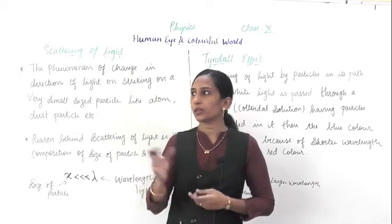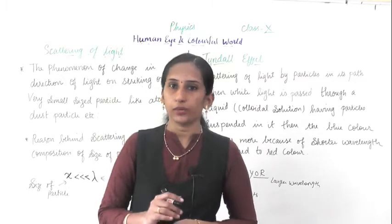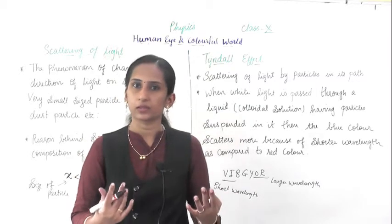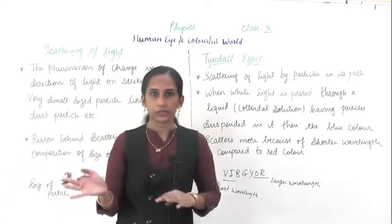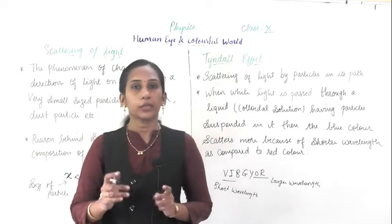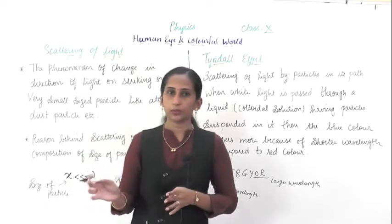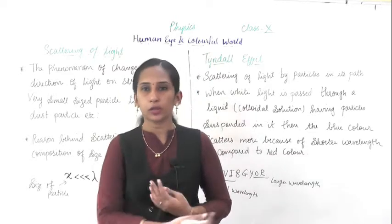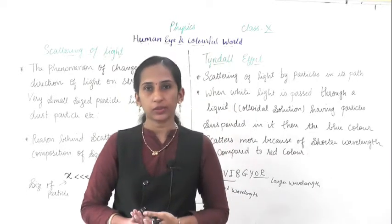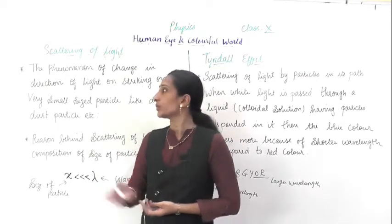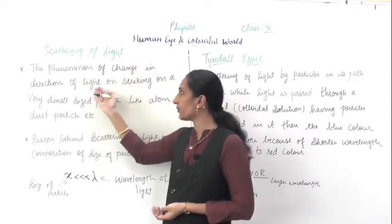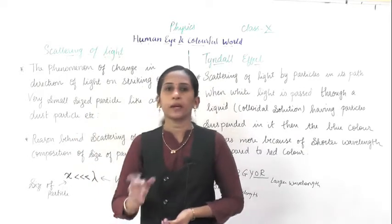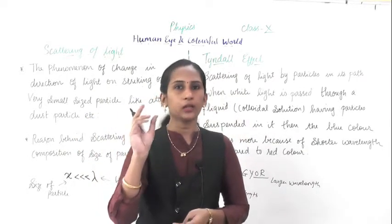Now you will think: why is everything not looking blue? Because when the sunlight falls towards the Earth, 90 percent of light falls as it is — that's why you can see the sunlight in its own color. But 10 percent of light strikes the small dust particles and scatters, emitting the blue color light. All these blue shades have a shorter wavelength, that's why scattering occurs. The phenomena is a change in direction of light on striking very small sized particles like atoms, dust particles, etc.